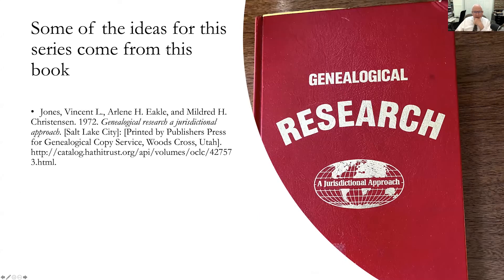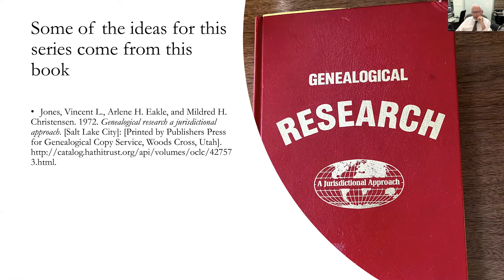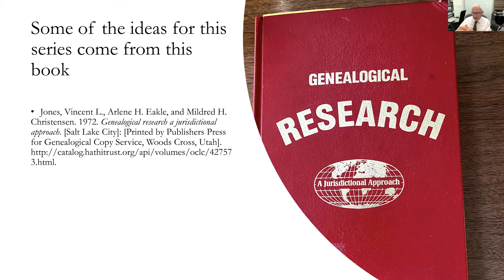I have to give some credit here, because some of the ideas for this series come from the book by Jones, Ekel, and Christensen, 'Genealogical Research: A Jurisdictional Approach.' I'm not recommending the book, just acknowledging it had ideas that helped me. The jurisdictional approach was an innovation about 40-50 years ago, and it's fundamental. I emphasize: the place, the place, the place — location, location, location. Any discussion about an ancestor ends with me asking, 'Where did all this occur? Can you tell me a specific location?'